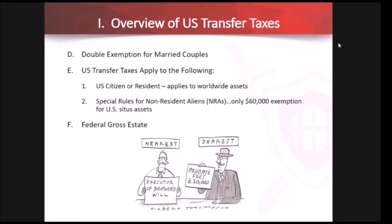At a later time, if the donee disposes of the asset through a sale, the taxable gain equals the amount realized minus the adjusted basis including depreciation. You can only acquire a basis in an asset by purchase, gift, inheritance, or through income. You also need to know the holding period: if more than a year and a day, it's a long-term capital gain taxed at preferable rates of 0%, 15%, or 20%. If short-term, it's taxed at the ordinary income tax rate, which is currently 37%.